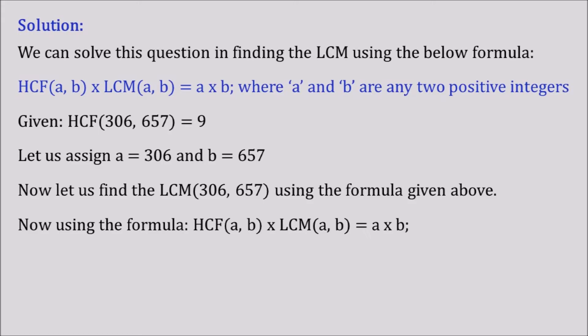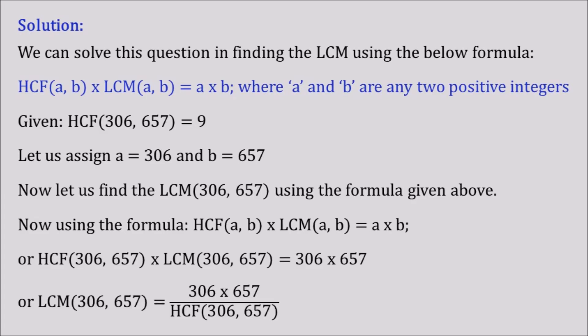Now using the formula, HCF of a, b into LCM of a, b is equal to a into b. Or we can say that HCF of 306, 657 into LCM of 306, 657 is equal to 306 into 657. Or LCM of 306, 657 is equal to 306 into 657 divided by HCF of 306, 657. Just simple multiplication and division.